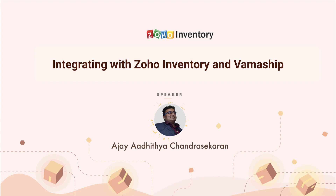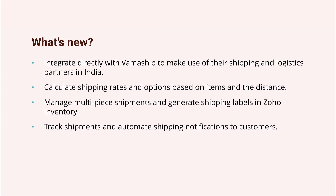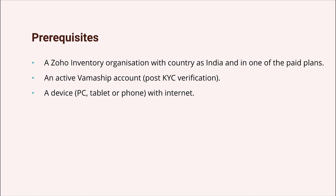This integration is for customers that use the India edition of Zoho Inventory. With this extension you can integrate directly with VamaShip to make use of all their shipping and logistic partners in India. You can calculate shipping rates and options based on your items and the distance involved. You can manage multi-piece shipments and generate shipping labels in Zoho Inventory, and finally you can track shipments and automate shipping notifications to your customers.